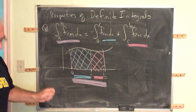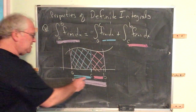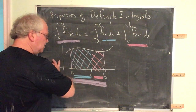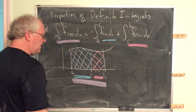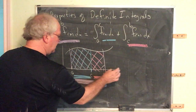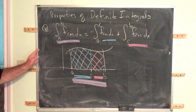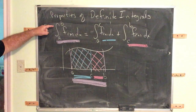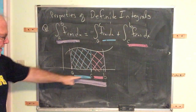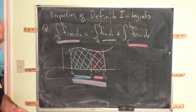What is not obvious, but is in fact the case, is that this property is true even if C is not between A and B. As long as the function is defined everywhere, C is allowed to be to the left of A, equal to A, in the middle, equal to B, or to the right of B — five scenarios — and each of those can be handled. This property is true no matter where the value of C is located relative to A and B.